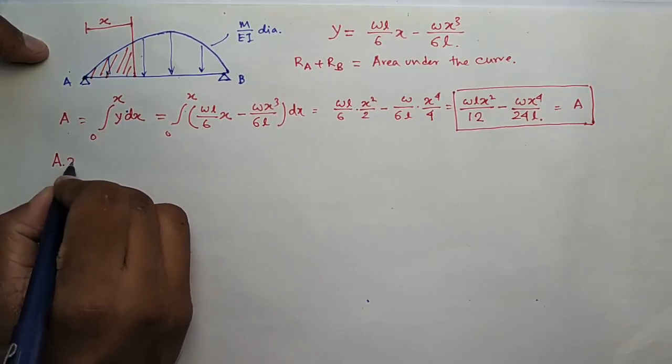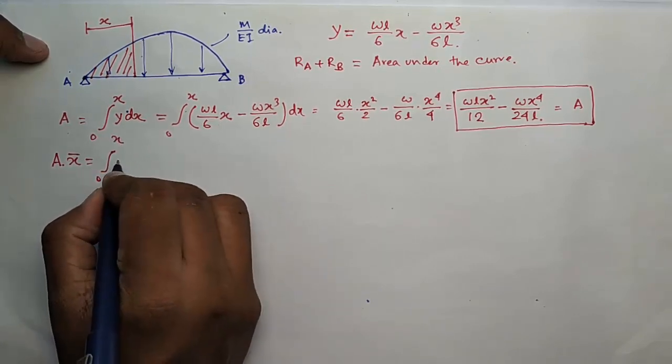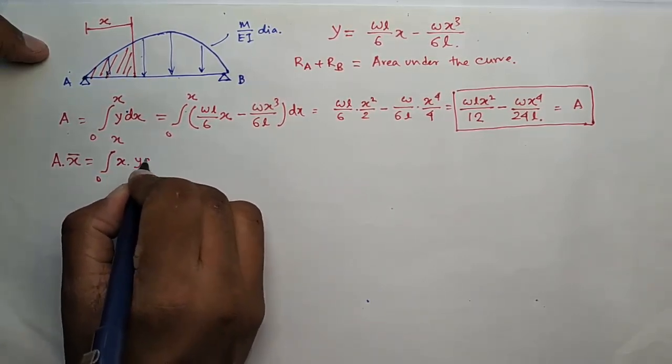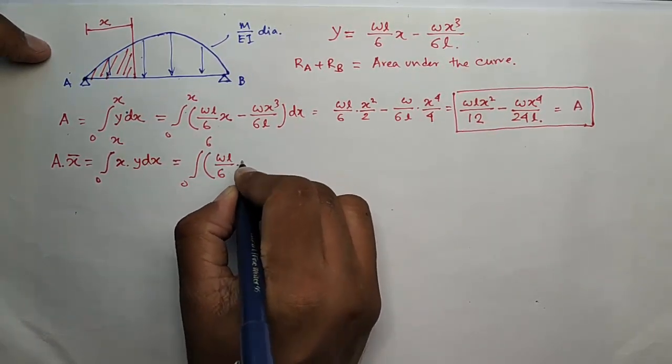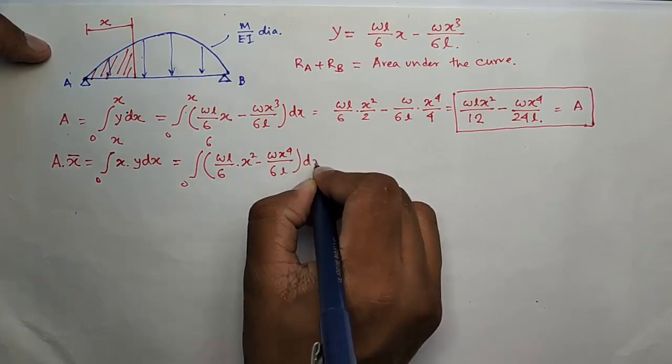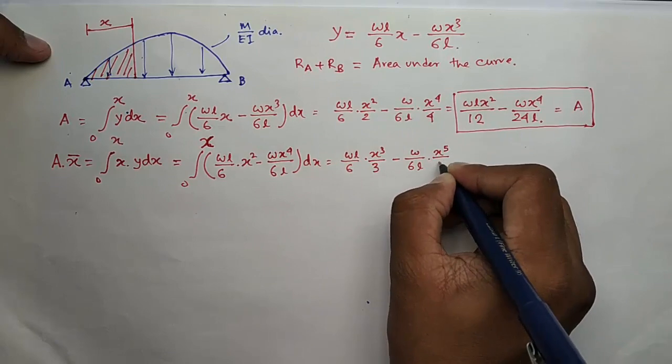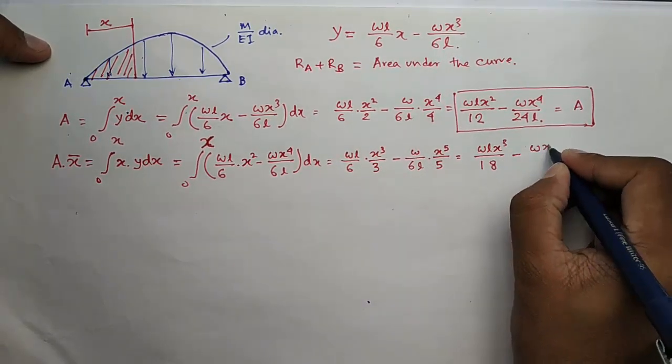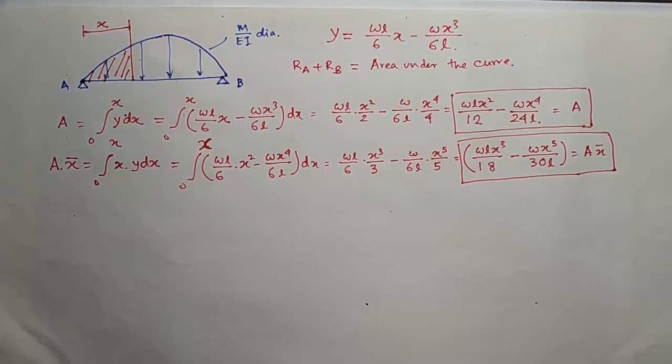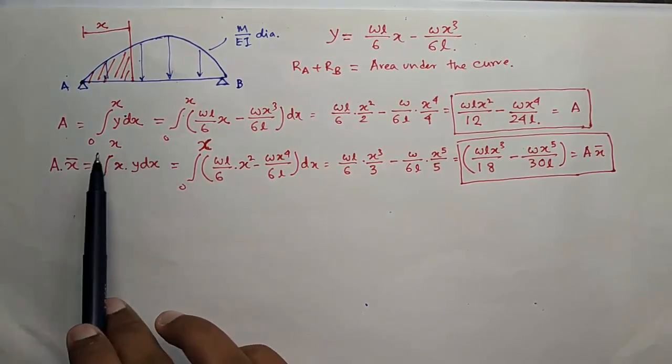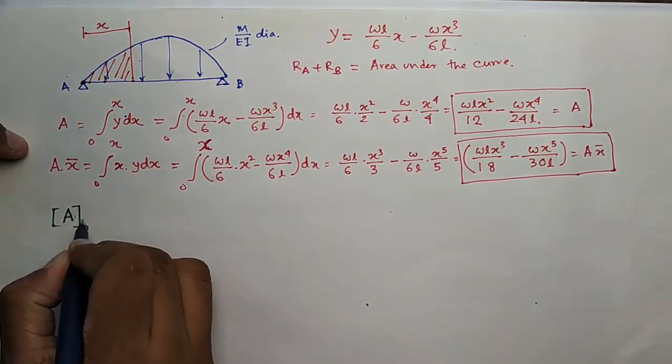Now calculate the CG distance. Let the CG distance of this area is x bar. So it will be A into x bar will be equal to integral 0 to x, x into y dx. Now total area will be from 0 to L.